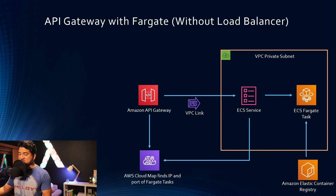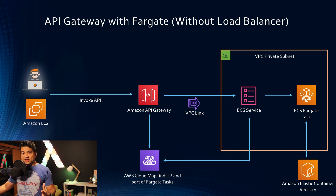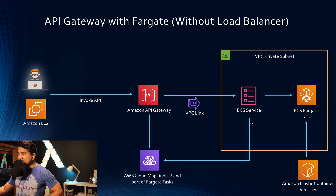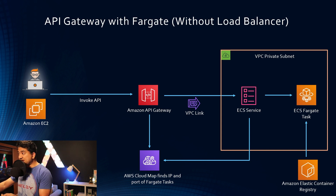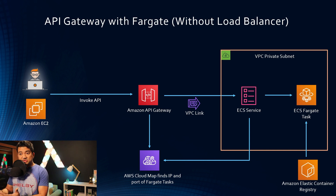At this point, the backend is all hooked up. A user or an application running on Amazon EC2 can invoke this API endpoint and reach the Fargate task. Now here comes the Amplify part. If you want to set all this up, there are a lot of steps involved: you have to set up API Gateway, VPC link, service, a private VPC, make sure it's a private subnet, create the ECR container registry, the Fargate task, and Cloud Map. If you want to codify this in CloudFormation, it's a lot. That's where AWS Amplify comes in — it's a framework that can deploy all of these with just a few clicks.